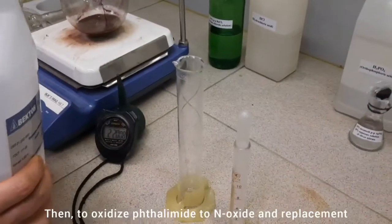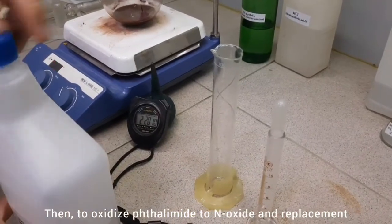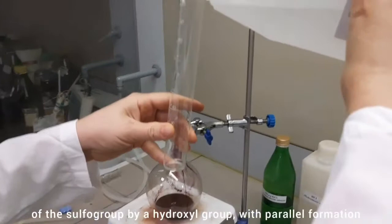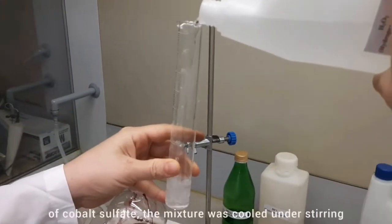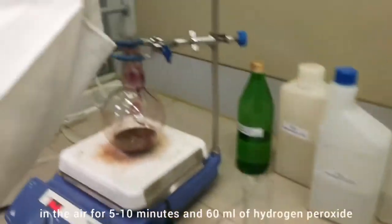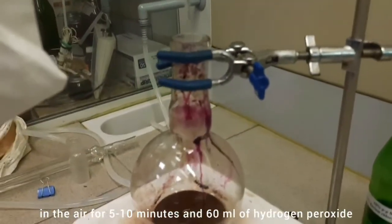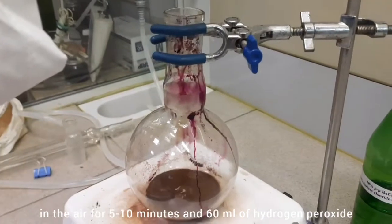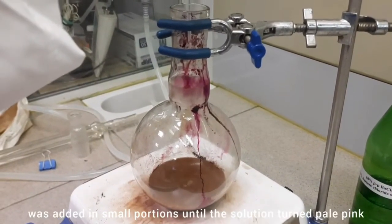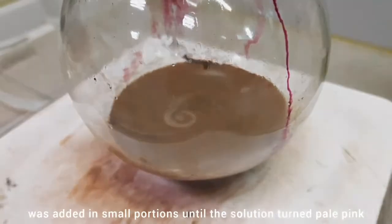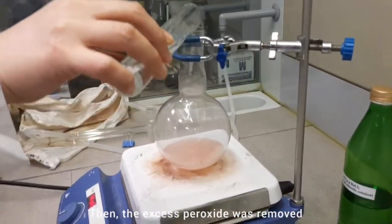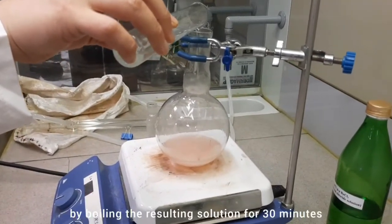Then to oxidize phthalimide to an oxide and replacement of the sulfur group by a hydroxyl group with parallel formation of cobalt sulfate, the mixture was cooled under stirring in air for 5 to 10 minutes, and 60 ml of hydrogen peroxide was added in small portions until the solution turned pale pink. Then the excess peroxide was removed by boiling the resulting solution for 30 minutes.